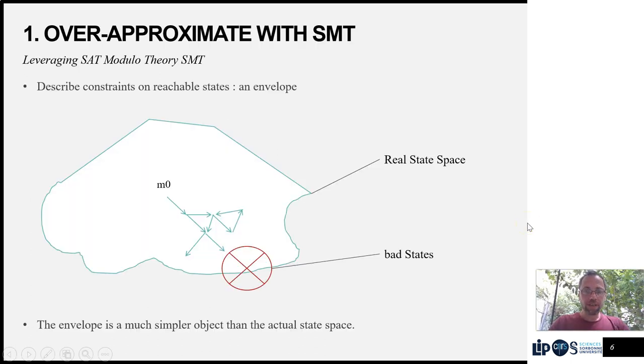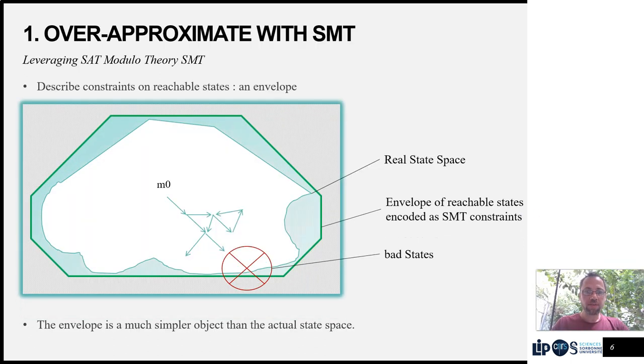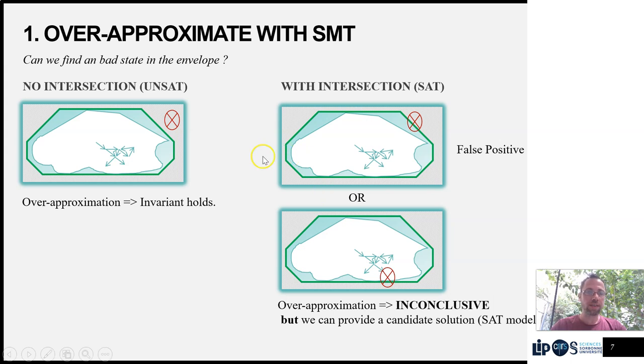The first approach consists in building an overall approximation of the state space of the system using SMT constraints. We can then reason on the envelope of the states and test whether we have an intersection with the bad states. If there is no intersection, we have proved that the invariant holds.